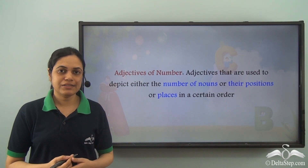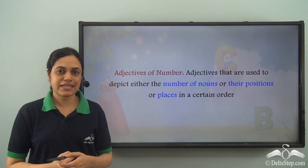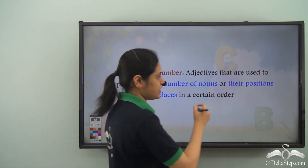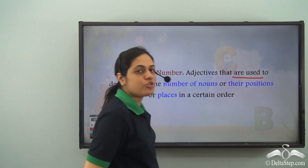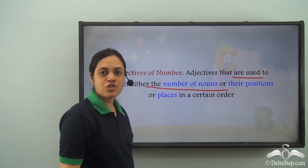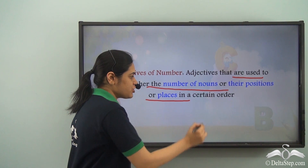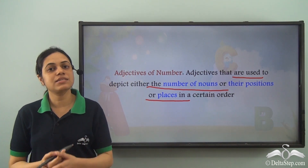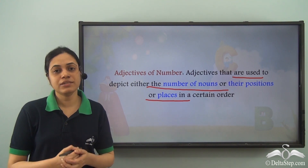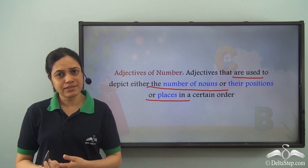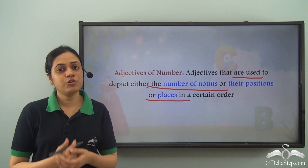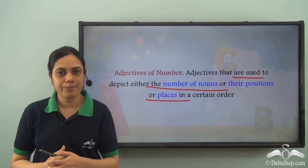We have already learned what adjectives of number are. Adjectives of number are used to depict either the number of nouns or pronouns, or their positions or places in a certain order. So, words like 2, 3, 30, or 1st, 2nd, 3rd, even some or many — these are used as adjectives of number.